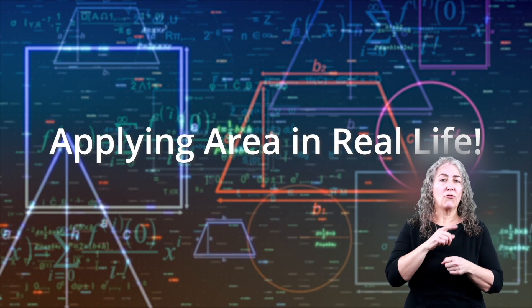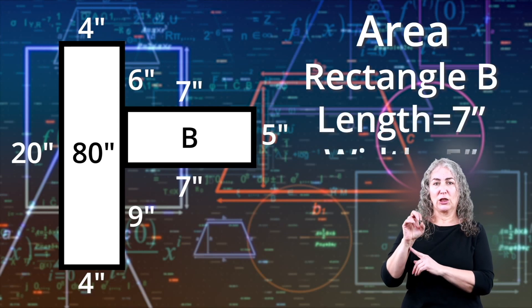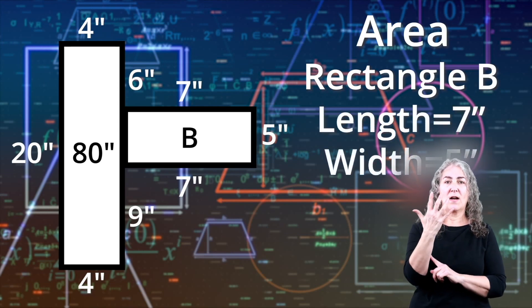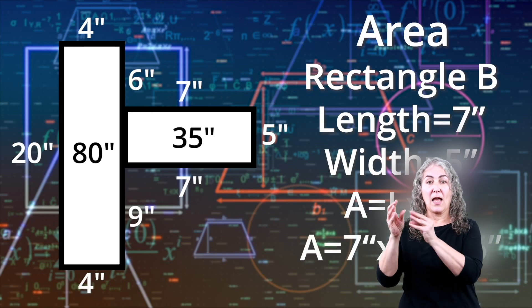Applying Area in Real Life. We know that the length of rectangle B is 7 inches and its width is 5 inches. Since the area is length times width, its area is 35 square inches.